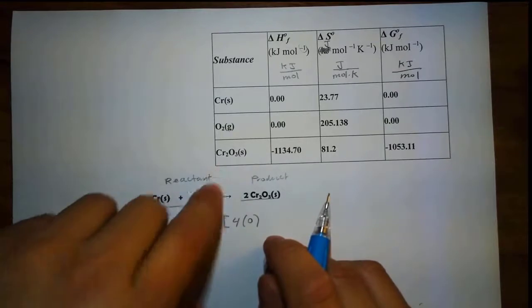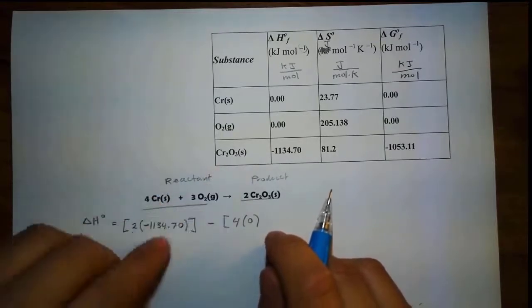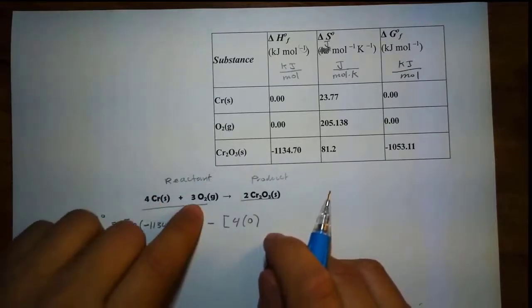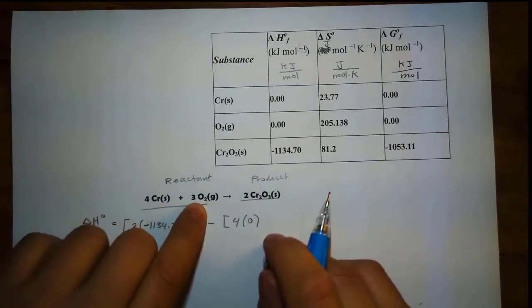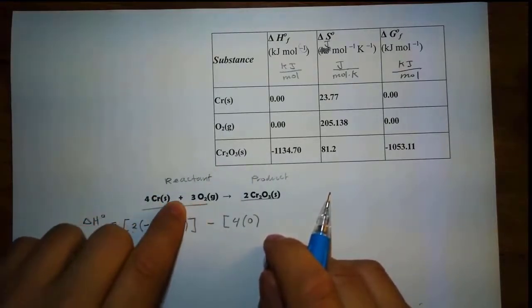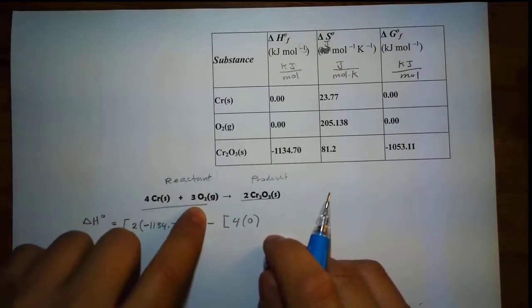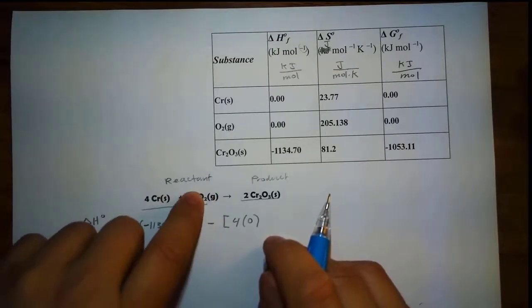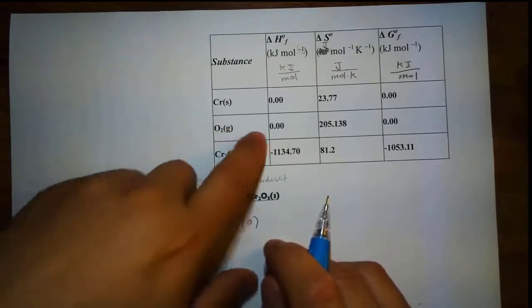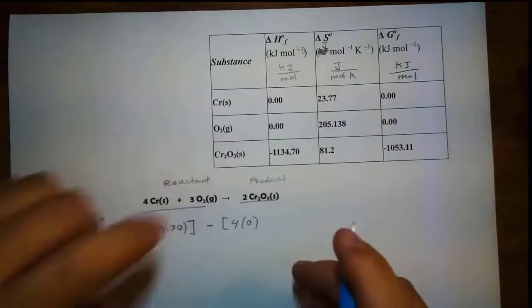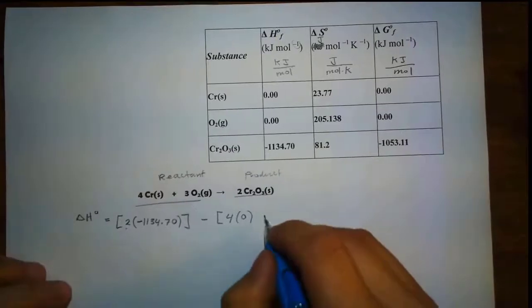Even the table gives us zero for oxygen. So even without looking at the table, we need to realize these two are zero because they are pure elements. So we have 3 times zero.